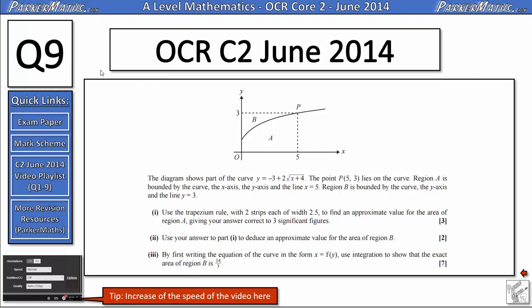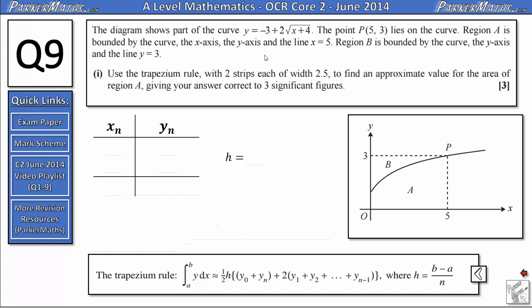Hi, I'm Mr Park and this is question 9 on the OCR Core 2 paper from June 2014. For more questions on this exam paper, click the link here or check in the video description. The diagram shows part of the curve y equals negative 3 plus 2 root x plus 4. The point P, (5, 3), lies on the curve. Region A is bounded by the curve, the x-axis, the y-axis and the line x equals 5. Region B is bounded by the curve, the y-axis and the line y equals 3. Use the trapezium rule with two strips each of width 2.5 to find an approximate value for the area of region A, giving your answer correct to three significant figures.